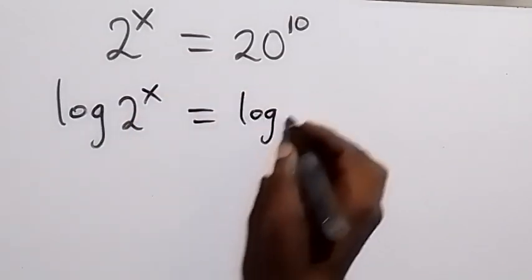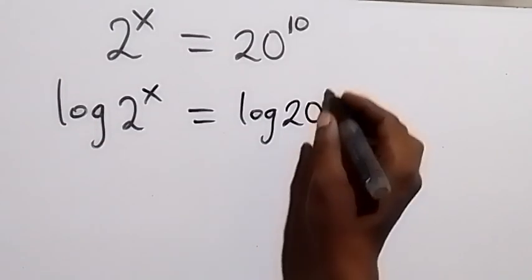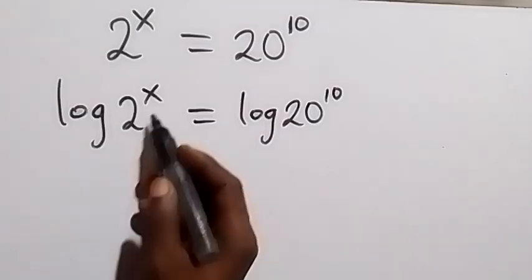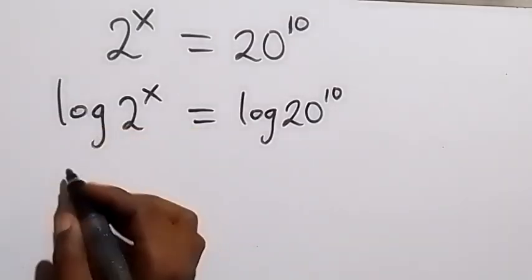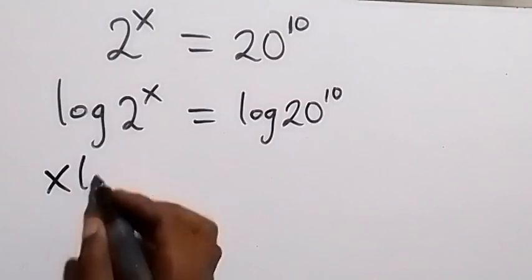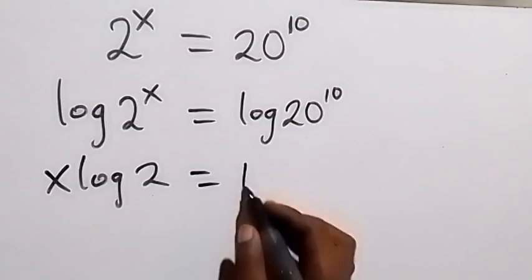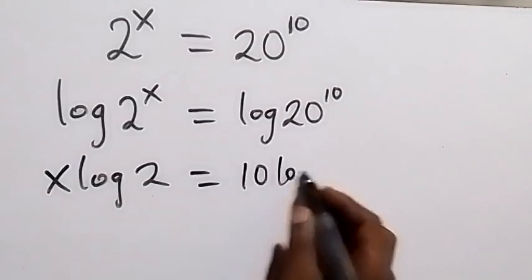And then from here, from the law of logarithm, the power here will be dropped to the back and we have x log 2, which equals to 10. Also here we have 10 log 20.